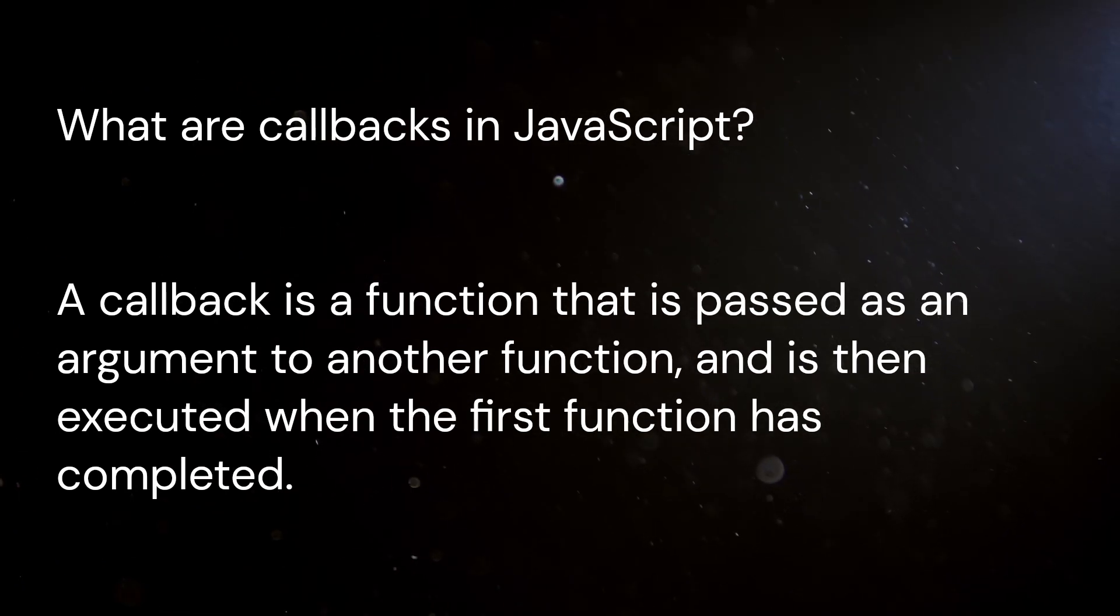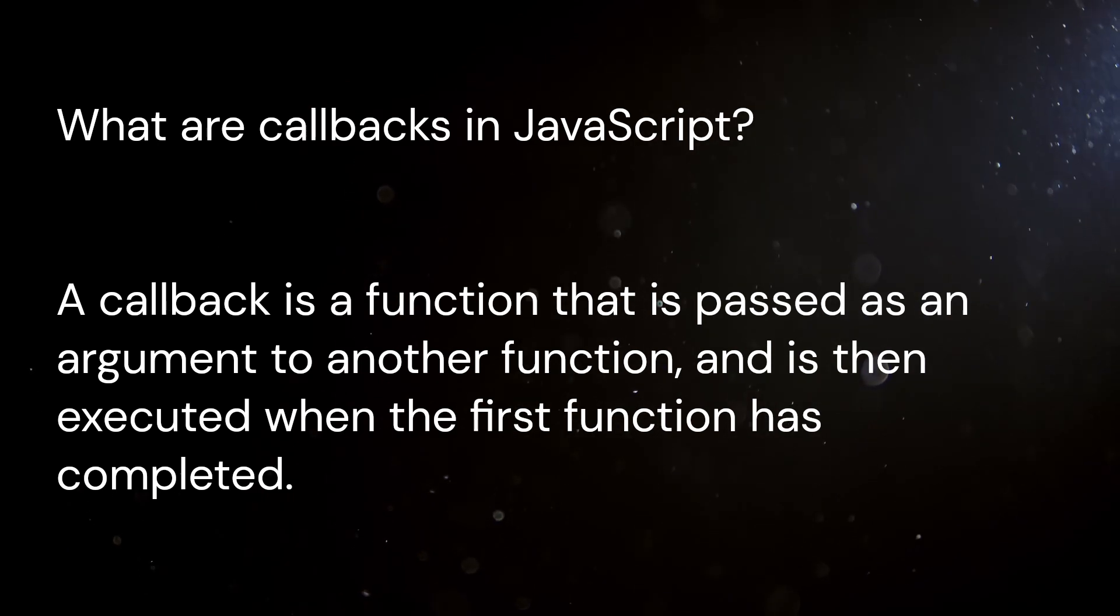7. What are callbacks in Javascript? A callback is a function that is passed as an argument to another function, and is then executed when the first function has completed.